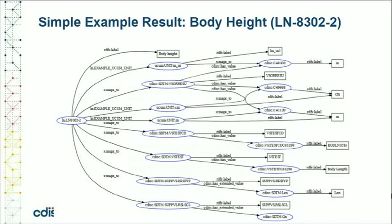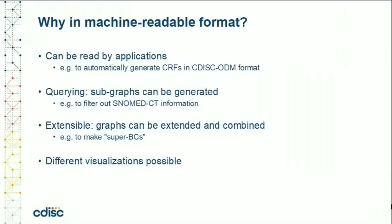Here is a simple example for body height. Starting from the LOINC code, the BC is generated including the possible units and the mappings to SDTM. Most results are more complex, but they are machine-readable, so that they can be used in many ways. Having them in machine-readable form allows us to automatically generate SDTM-annotated case report forms, for example in ODM format — something we have already tried out. We can also query them, breaking complicated graphs into sub-graphs, combine such graphs, and generate different visualizations.